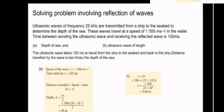Speed of the wave, v equal to 1500 meters per second. The time interval, t equal to 120 milliseconds. Distance travel equal to speed multiplied by time, 2d equal to vt.